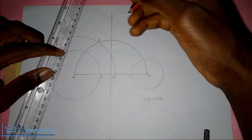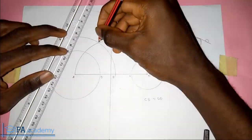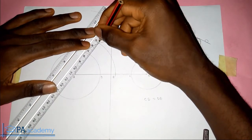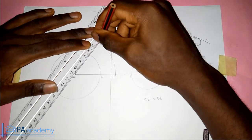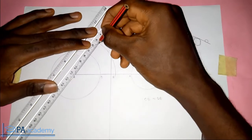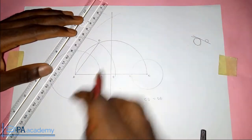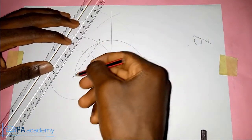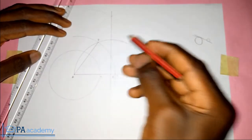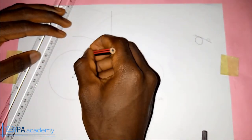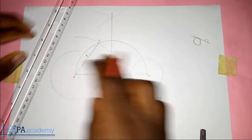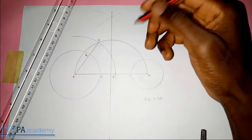So from point F now, we are going to draw a straight line to point A. Now where this line AF is touching this circle on the circumference, let's call that point G. Note all those points — point G.